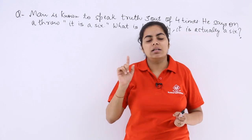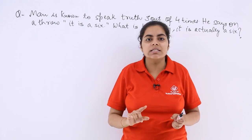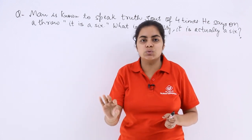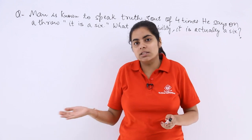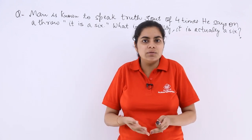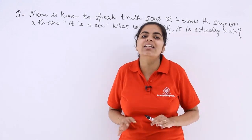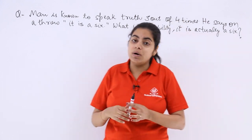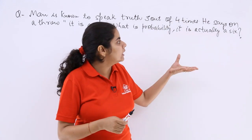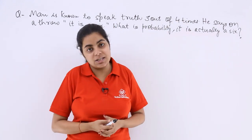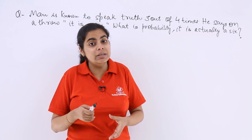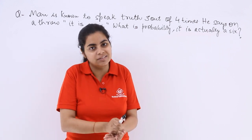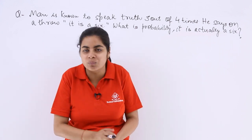So either the first case: the truth is it was a 6 and he said the truth. Or the second case: the truth was that it was some other number but still he said the lie. So there are 2 possible cases. Now what is the probability that it is actually a 6 — that he spoke the truth and there was indeed a 6 on the throw?